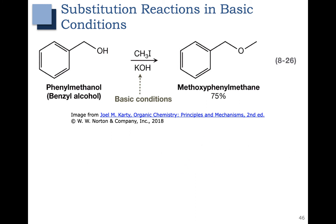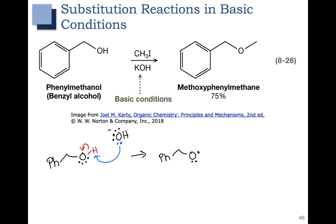So what would be reasonable? Well, we have a base, so it would make sense for a proton transfer to occur first and create another base. We can use the base present from the potassium hydroxide — I'm not showing the potassium because that's just a spectator ion. The base comes in and pulls off the hydrogen attached to our benzyl alcohol. The oxygen-hydrogen bond breaks to put a lone pair on the oxygen, giving us a negative charge on the oxygen, and the hydroxide has now formed water.